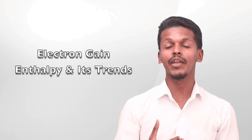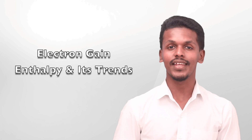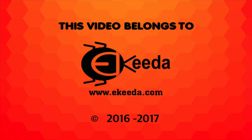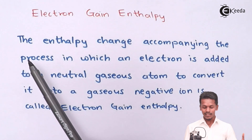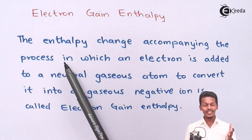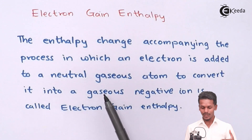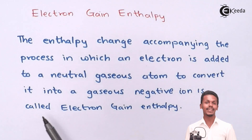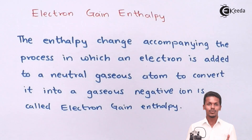Hello friends. In the last lecture we studied various properties like atomic radius, ionic radius, and ionization enthalpy. Now we are moving towards the next property known as electron gain enthalpy. The enthalpy change accompanying the process in which one electron is added to a neutral gaseous atom to convert it into a gaseous negative ion is known as electron gain enthalpy.